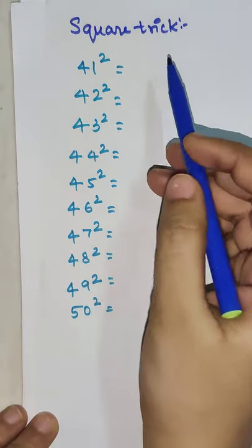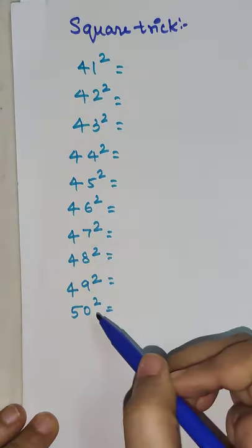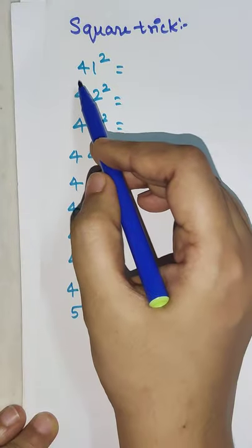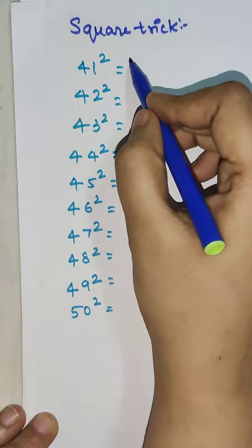Students, today I am going to show you a square trick for numbers from 41 to 50. So here, since we are starting with 41, we will take the square of 4, which is 16.